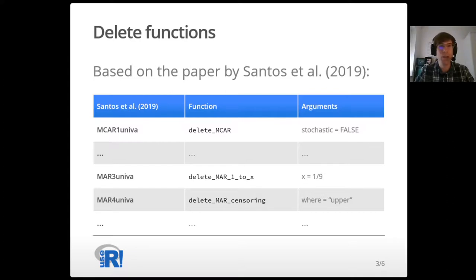As you can see from this part of the table, all function names indicate the created missing data mechanism. Furthermore, different types of missing at random and missing not at random are implemented and the function names indicate the type too. So from the function name, you can clearly see what type of missing data you will get.